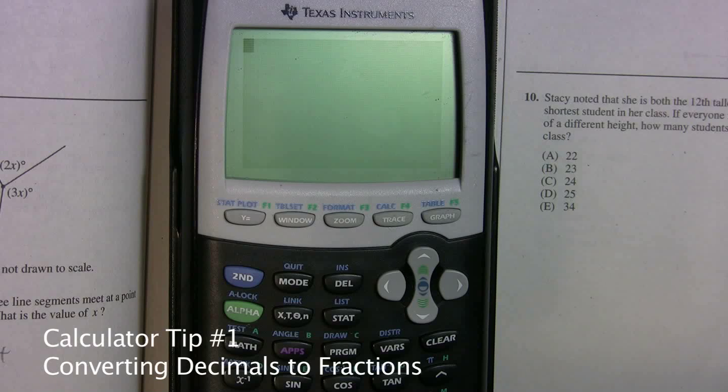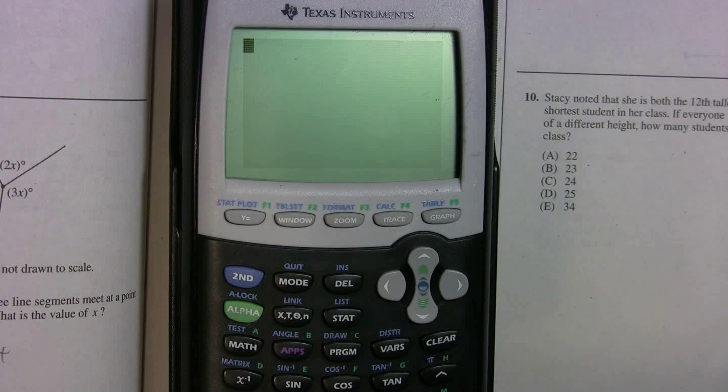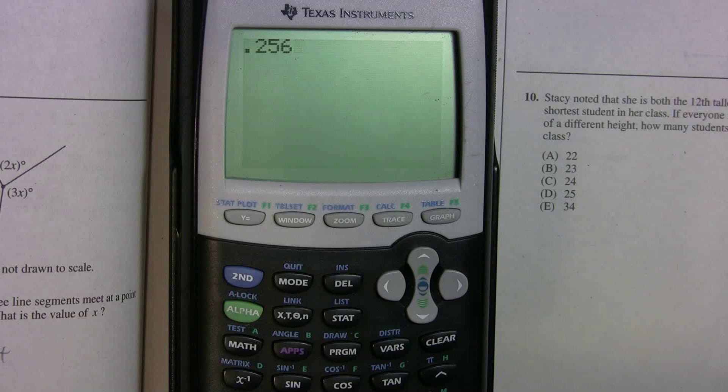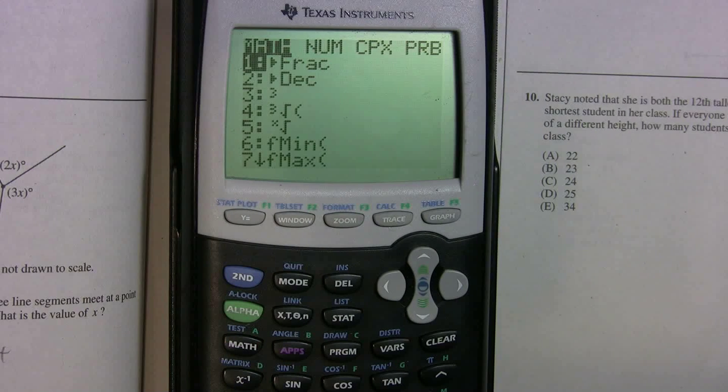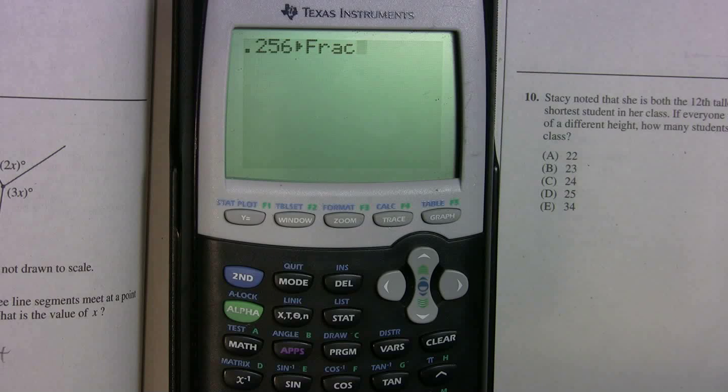I guess you call this a calculator trick, or a tip. I think most students know about it, but if you don't, it's really helpful. Let's say you're doing a problem, and you get an answer, and it's in decimal form. Let's say you got .256, but when you look over at your answer choices, all your answers are in fraction form. All you have to do, hit math, hit enter again, you get the fraction function, and it'll convert it into a fraction. So really helpful if you get a decimal, and all your answer choices are in fraction form.